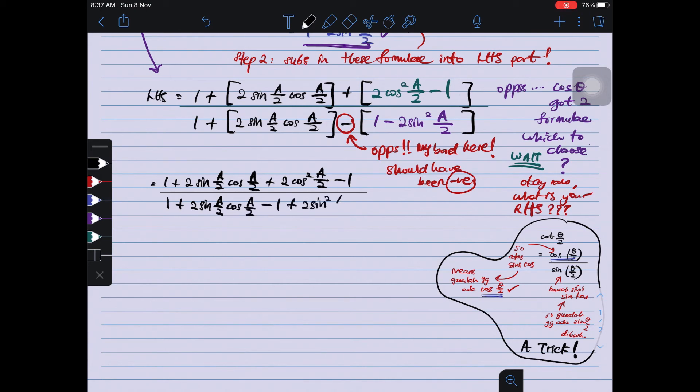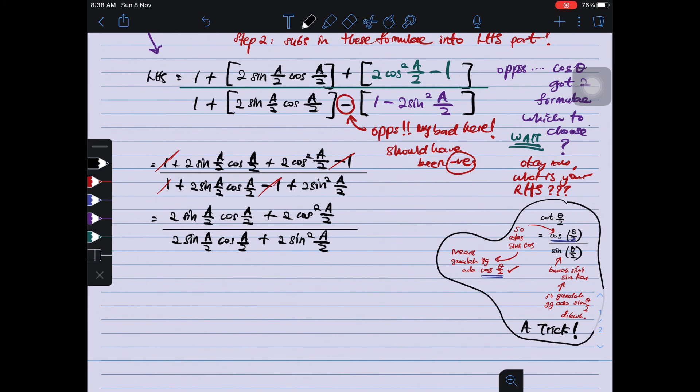Okay, so negative 1 plus, okay, plus, because multiply in, negative negative positive. So I know that 1 minus 1 is 0, 1 minus 1 is 0. Top and bottom, what remains is a more simplified version, which is that thing divided by that thing over there. You see it yourself.